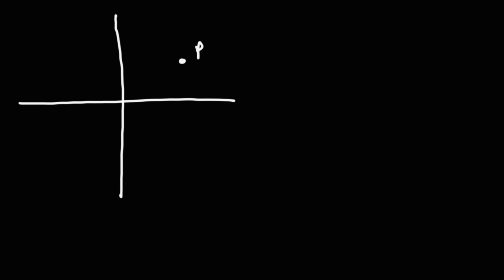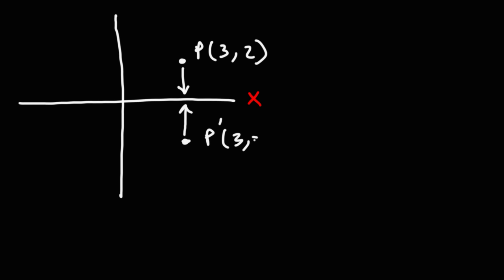Let's say we have the point (3, 2). What's going to be the reflected point if we reflect it over the x-axis? Notice that we have to travel two units to get from the point to the x-axis. The new point will have the same x value, but the y value changes from positive 2 to negative 2. So the reflected point across the x-axis is (3, negative 2).